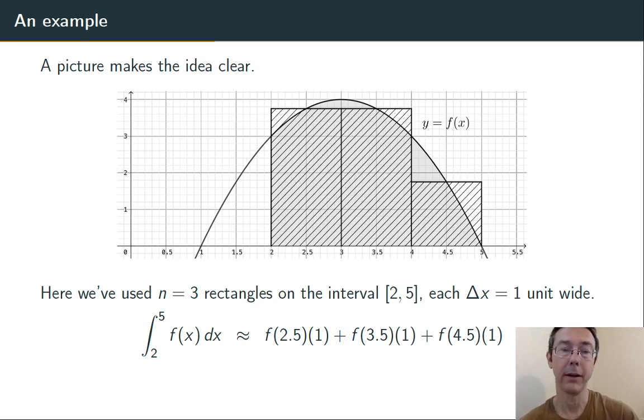And just looking at the graph, I can approximate those values. f(2.5) seems to be about 3 and 3 quarters. Same with f(3.5), and f(4.5) seems to be about 1 and 3 quarters. So I can just do that arithmetic and approximate this integral as 9 and 1 quarter.